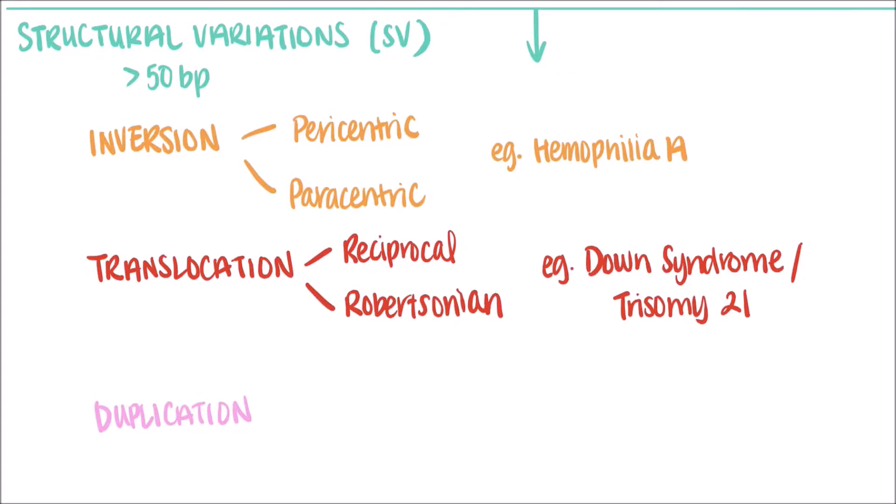Certain genes can also undergo duplication, resulting in multiple copies. A popular example is the globin genes, which have duplicated and diverged into the alpha and beta globins.